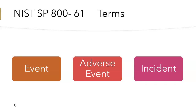As per NIST, an incident is a violation or imminent threat of violation of computer security policies, acceptable use policies, or standard security practices of a particular organization. For example, if anyone is using a file transfer service on a network where that service is not allowed or blocked, then the event of file transfer is considered an incident. The document provides more examples of incidents as well.